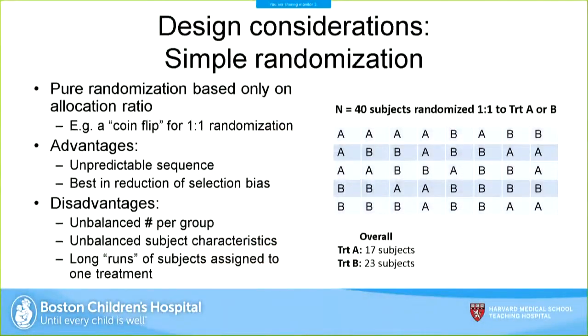A successful randomization requires two things: generating an unpredictable sequence of intervention allocations — either treatment A or B — and concealing this allocation until the intervention is assigned to the patient, so you can't predict which intervention the next individual will receive. There are several types of randomization to consider. Simple randomization randomizes based only on the allocation ratio — for a 1:1 ratio to two treatment groups, it's essentially a coin flip at 50/50.